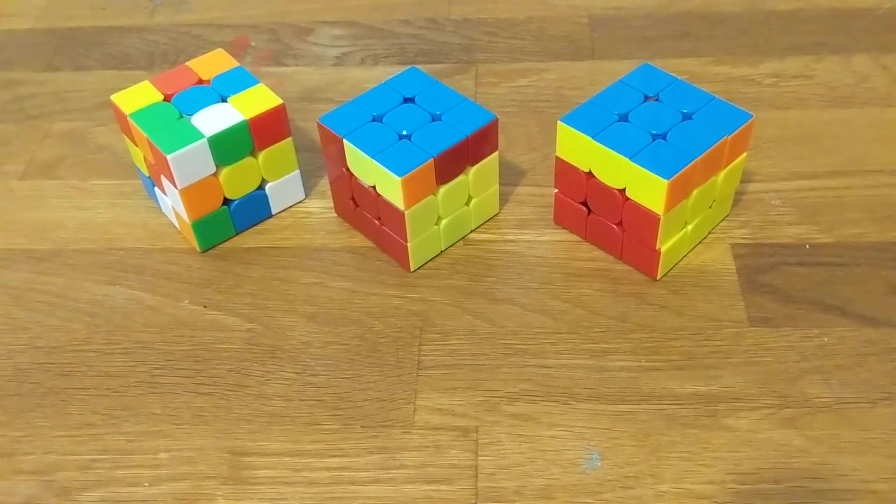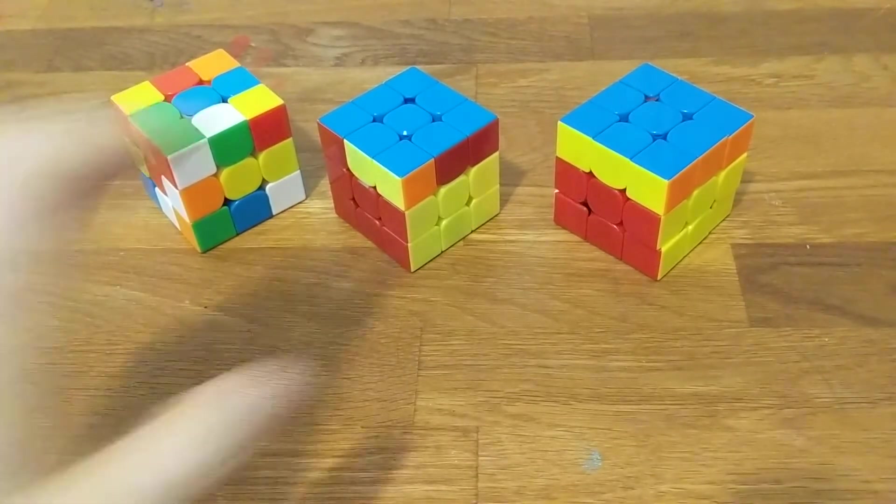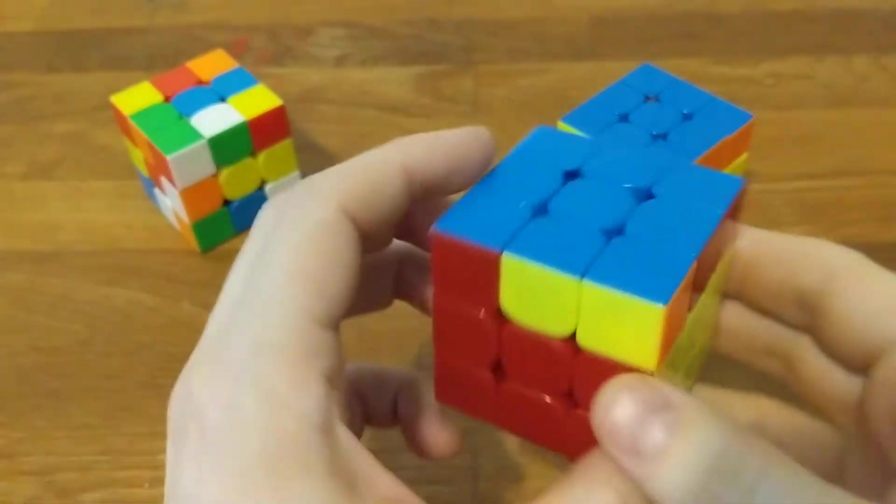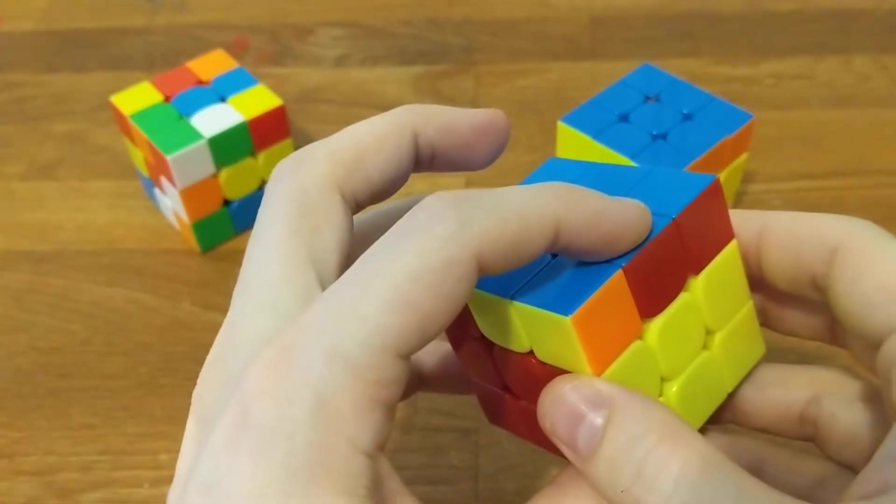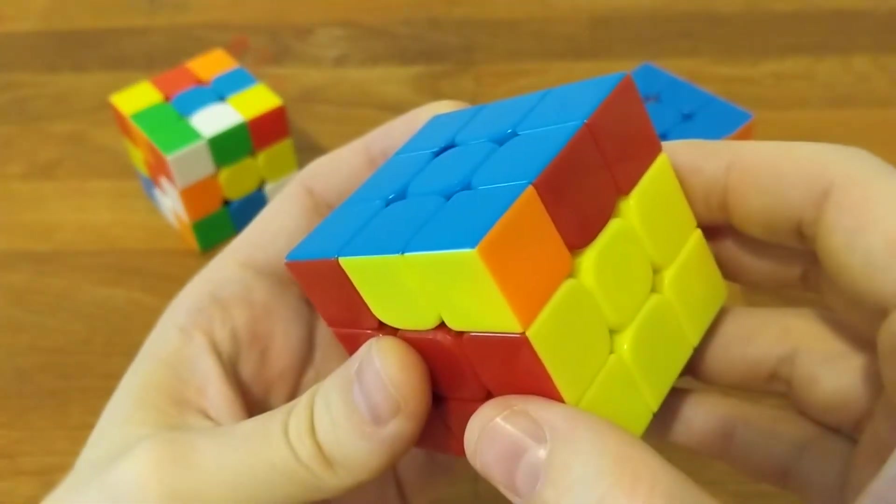Every quarter turn of any face of the cube will convert the cube between even and odd parity. That's easy to see here on this cube. It has two unsolved edges here and here, and two unsolved corners here and here. But if we do a U prime,